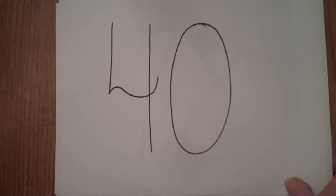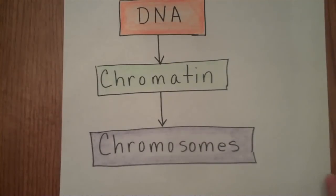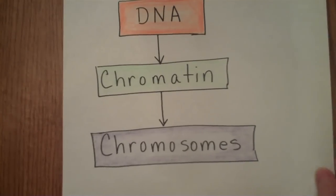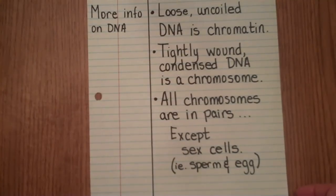So what is the structure of a chromosome? When chromosomes are loose and uncoiled, the DNA is called chromatin. When it's wound tightly and condensed, the DNA is called a chromosome. So how do your notes look now? You should have information on DNA loose and uncoiled as chromatin, and tightly wound as a chromosome. Press pause if you need to.